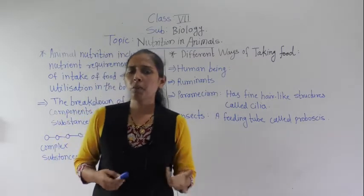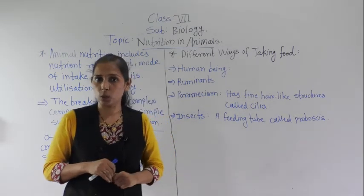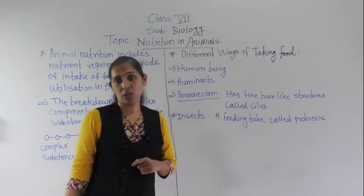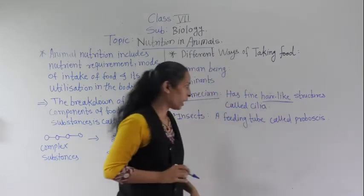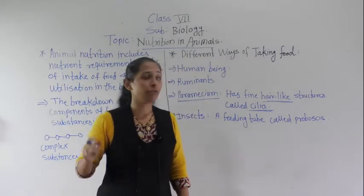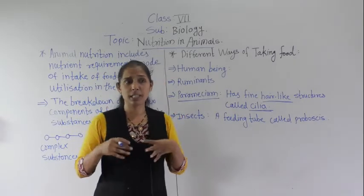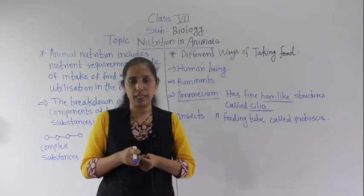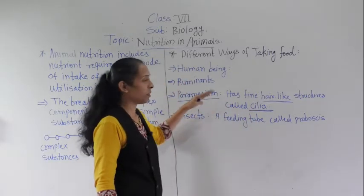Next are ruminants. Ruminants like cow, buffalo, and goat take green grass directly into their mouth — they take food directly into their mouth. Next is Paramecium, which is a unicellular microorganism. Paramecium has hair-like structures on its body called cilia. The body of the Paramecium is totally covered with cilia, which move continuously. These cilia help the Paramecium absorb food into its mouth with the flow of water.